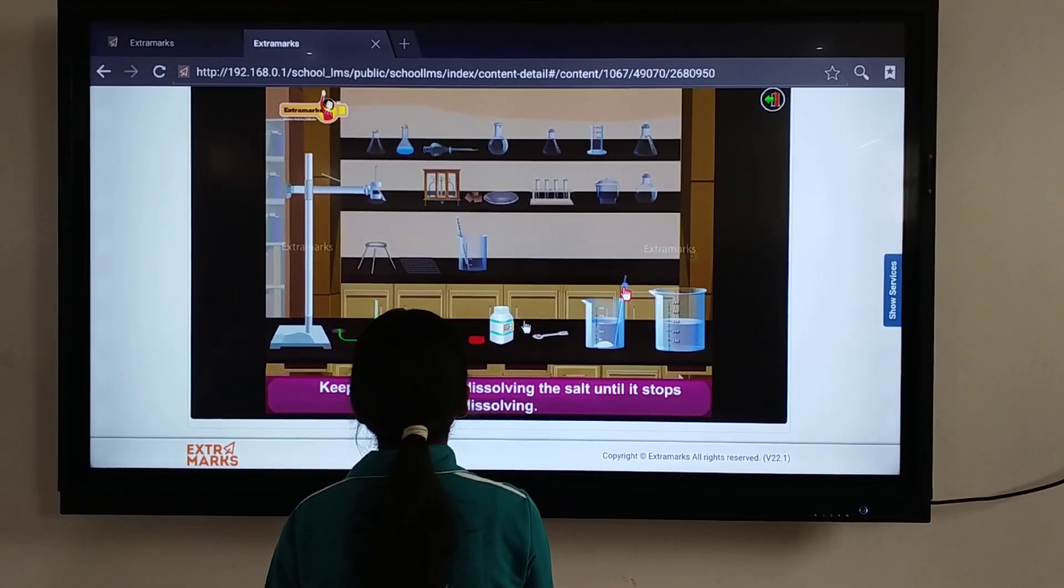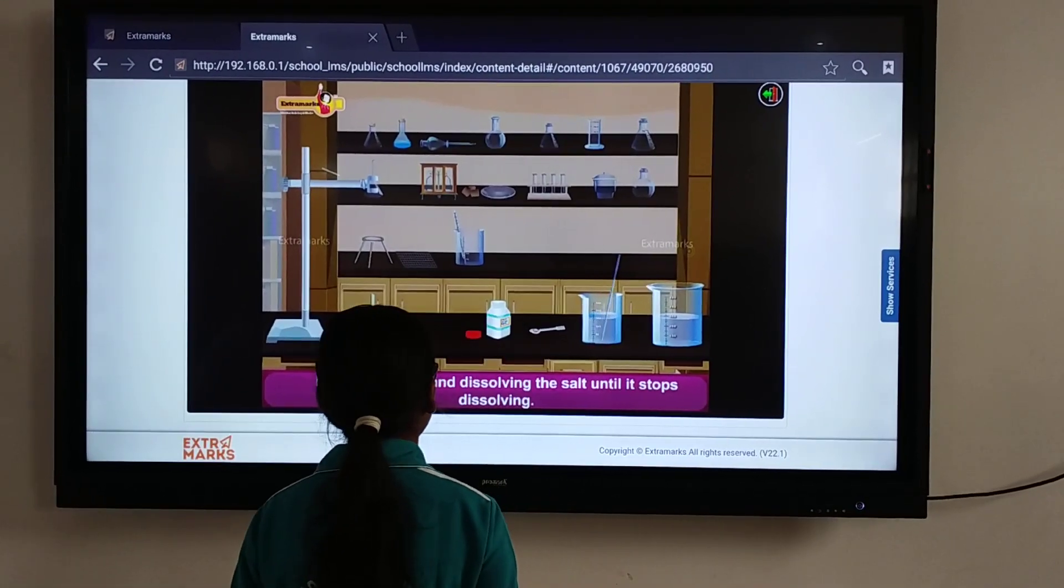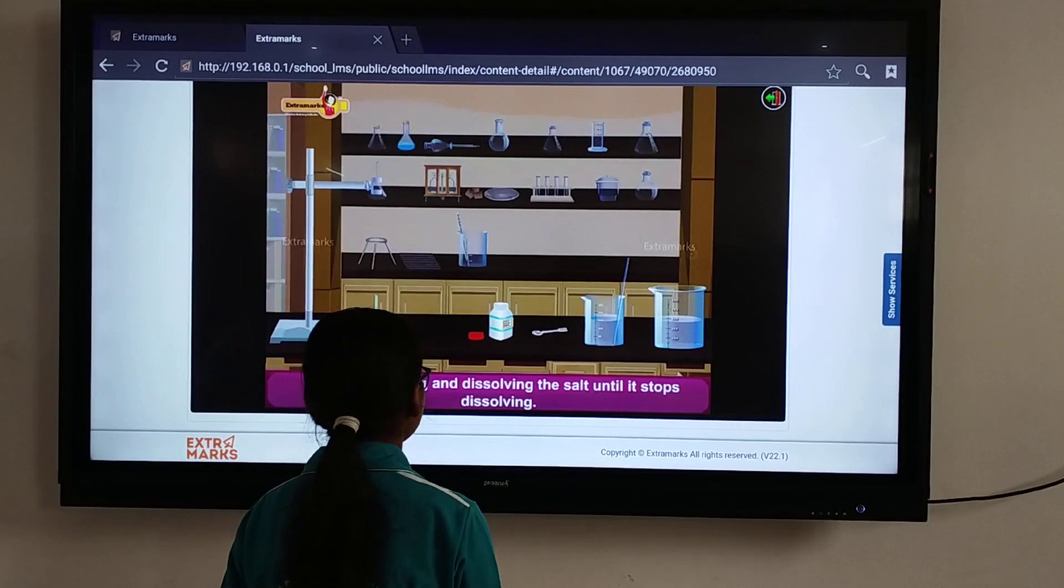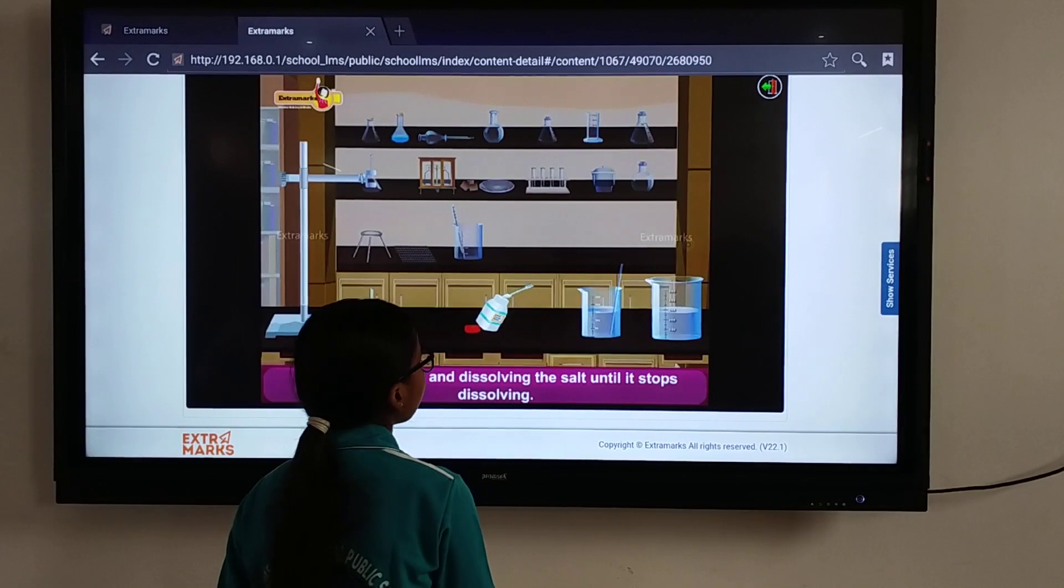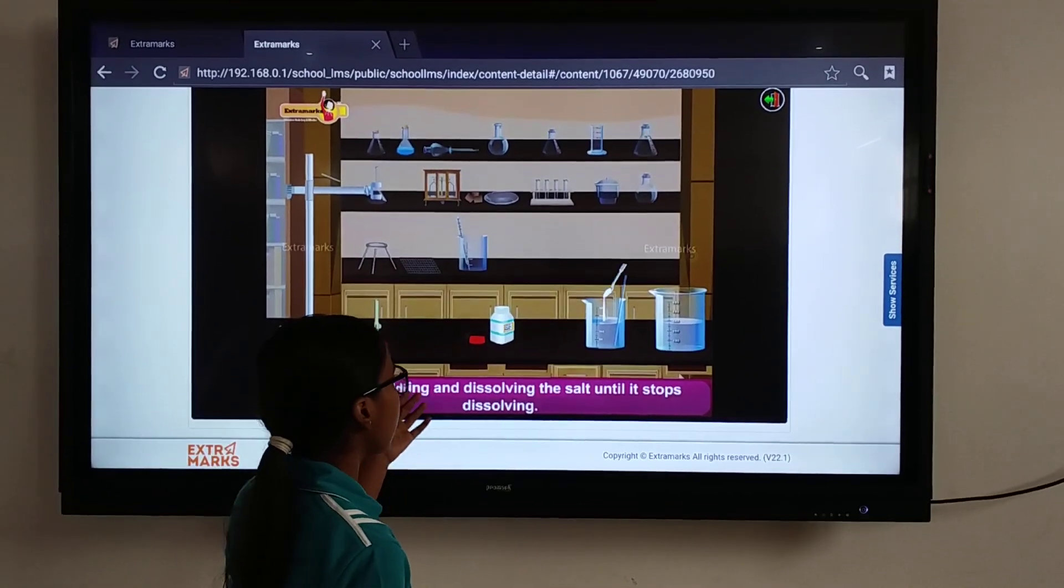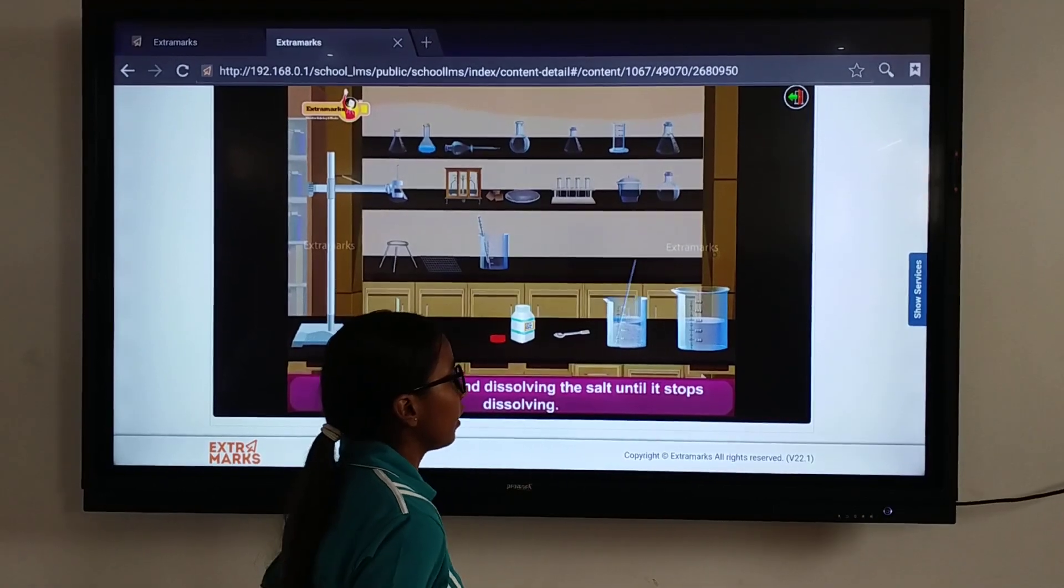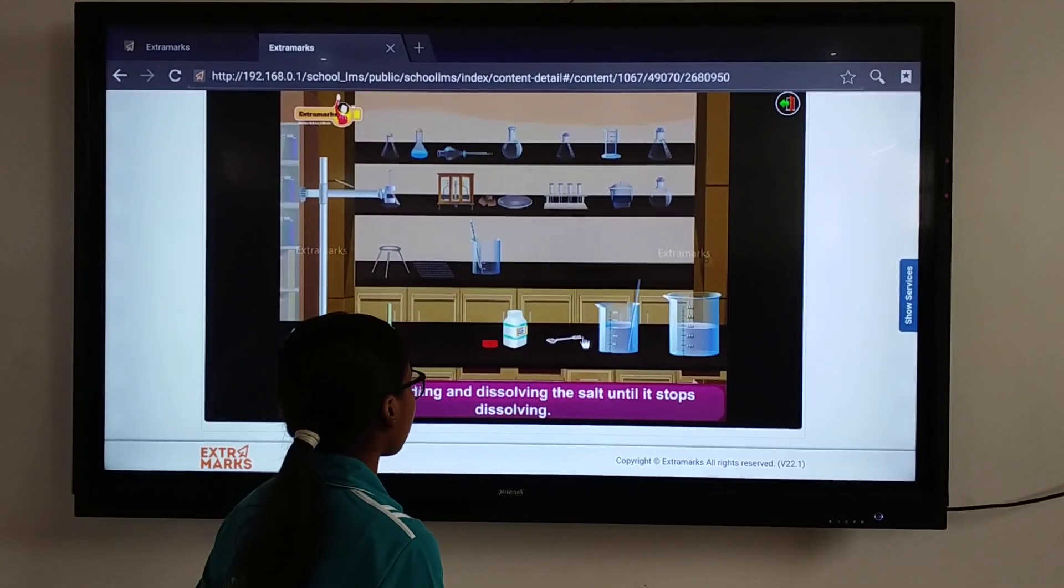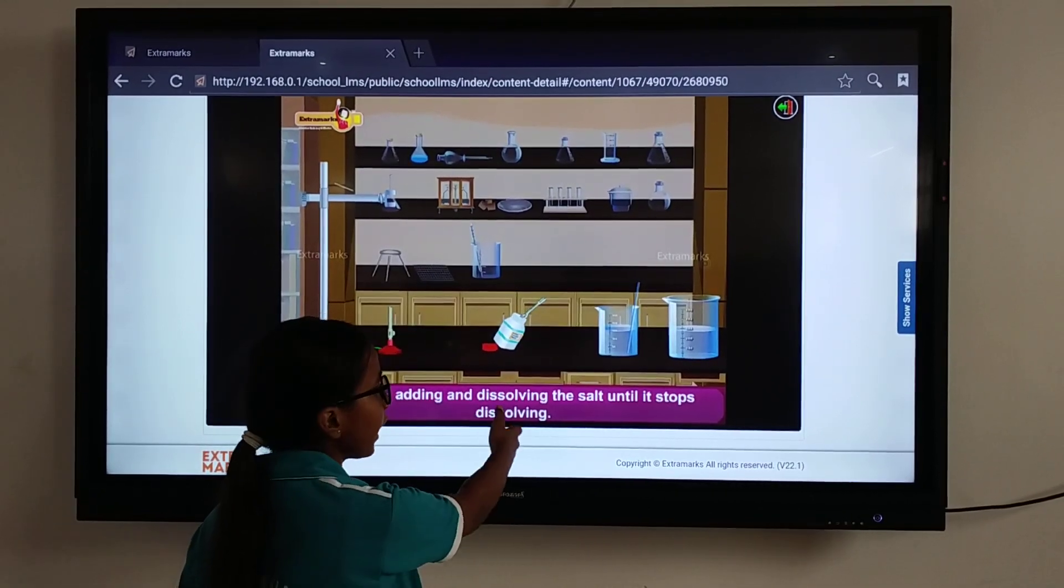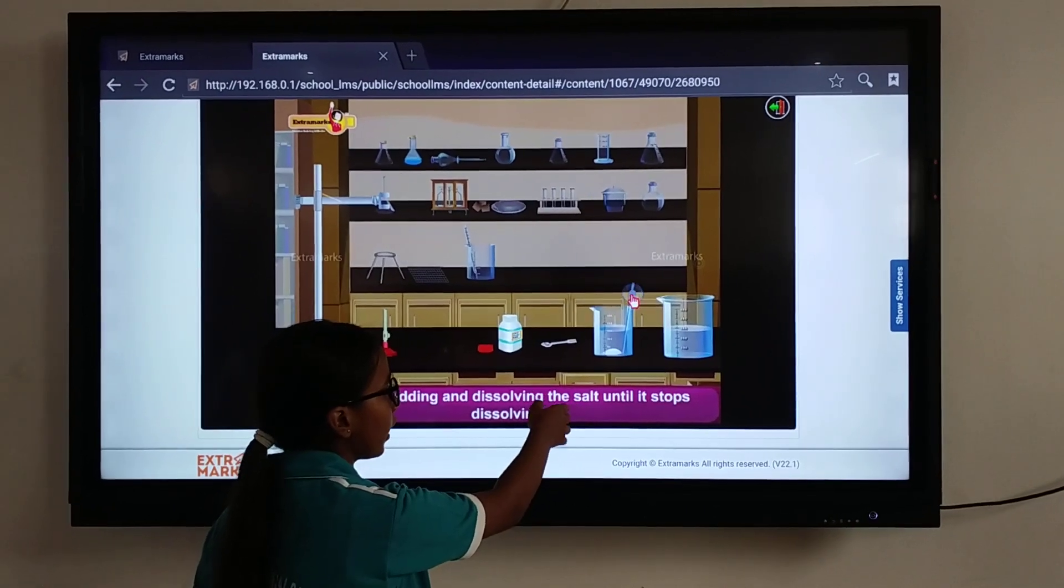Dissolve the salt again and stir it properly. Like this we will take out more salt and dissolve it in the beaker, stirring it again and again. One more time we will dissolve the salt in the beaker and stir it again.